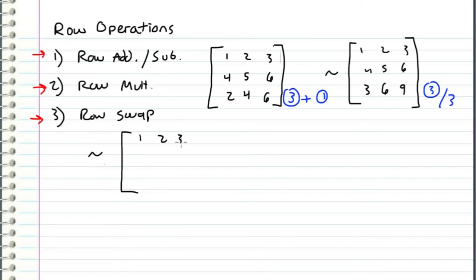And again, these first two rows remain the same. But this third row has all of its components divided by three. So three over three is one, six over three is two, and nine over three is three.